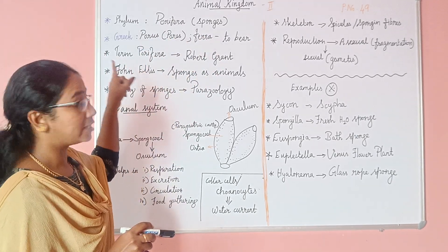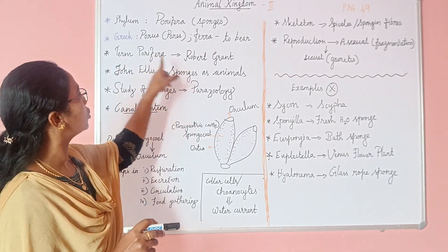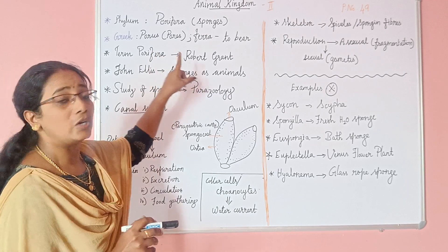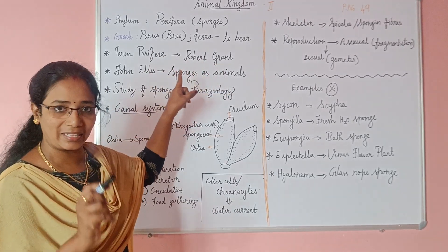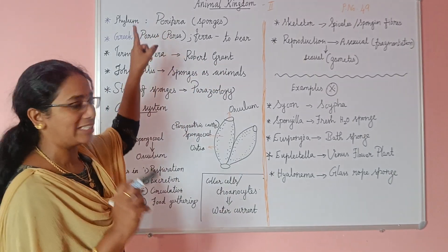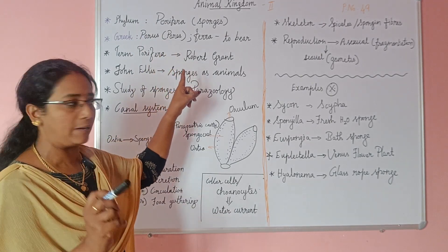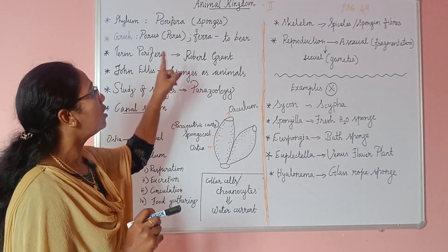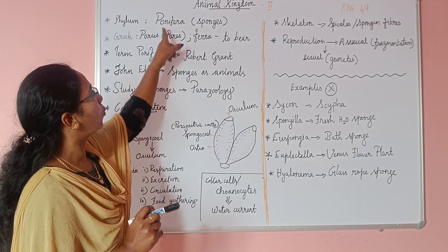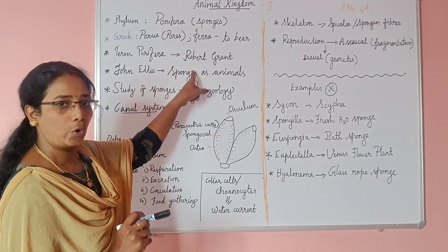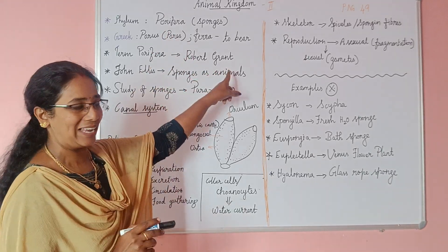The term Porifera was first coined by Robert Grant. Remember, the terminology 'Porifera' was first developed by Robert Grant.